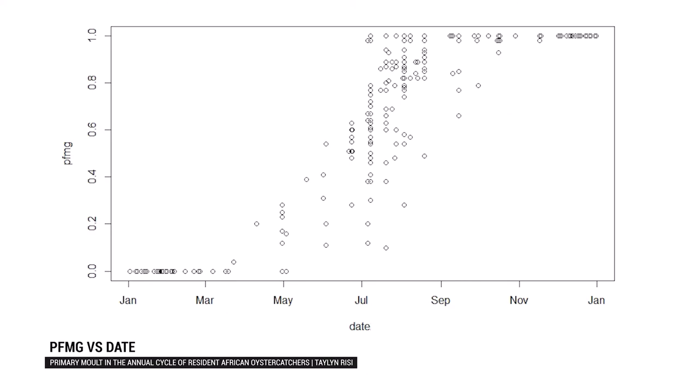In this plot, the points represent the right wing primaries of African Oystercatchers. I condensed this data so that the PFMG — percentage feather mass grown — for the wing is visible across the timeframe of one year.